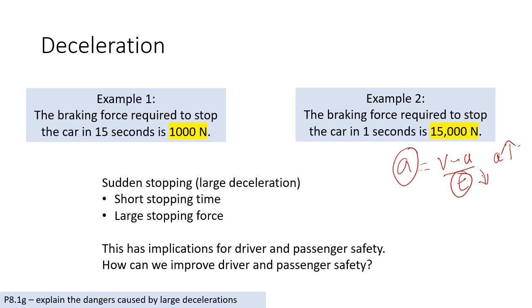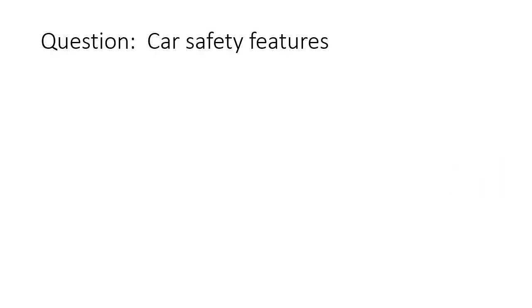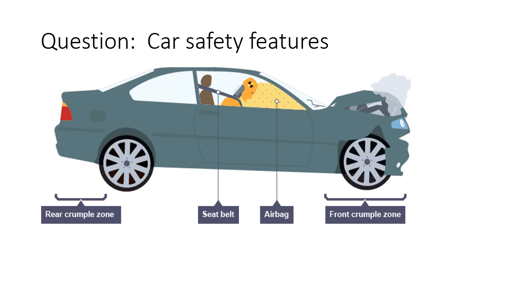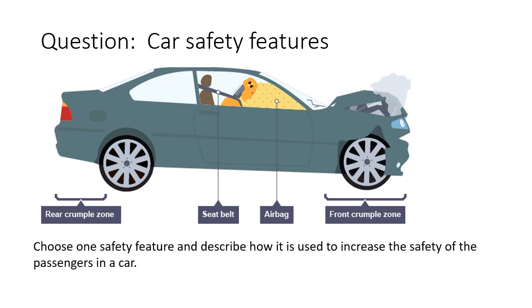So exerting a lot of force is not safe. What can we do to make it safe for the driver and passenger? The main safety features in a car are seat belts, airbags, and crumple zones at the front and back. We will look at one safety feature — a seat belt — to understand why it is designed that way. The basic idea is the same for all of them.